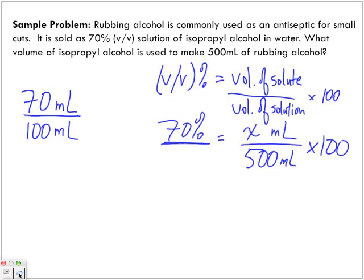Because 70 divided by 100 gives me that decimal. That's how we get the percent. So, it's equal to X milliliters over 500 milliliters.